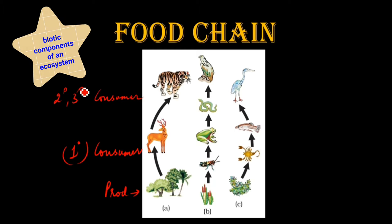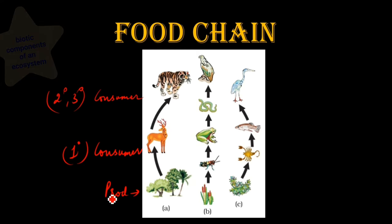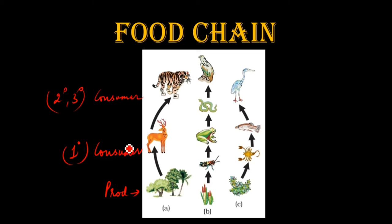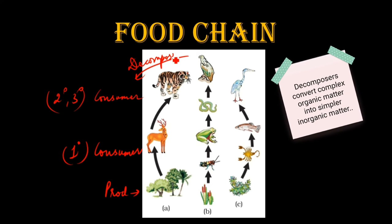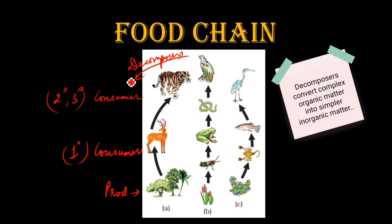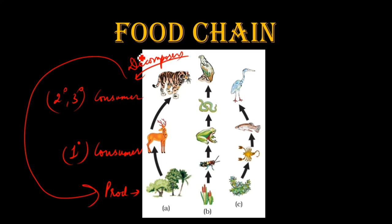This is primary. Now the producers will be eaten up by the consumers, and the consumers will be eaten up by the decomposers. Now the decomposers will decompose the consumers, and the residue which is left over will again be taken up by the producers. So this becomes a type of chain — a series of organisms who are taking part and eating one another. This type of chain is known as food chain.